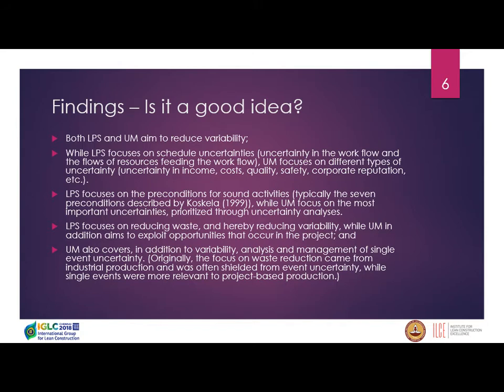Findings: is it a good idea? We could already find something written about this. Both last planner system and uncertainty management are about reducing variability. What we can see is that last planner system focused on schedule uncertainties or removing constraints in the schedule. Uncertainty management also discusses different kinds of consequences, like consequences for costs, safety, company reputation, etc.